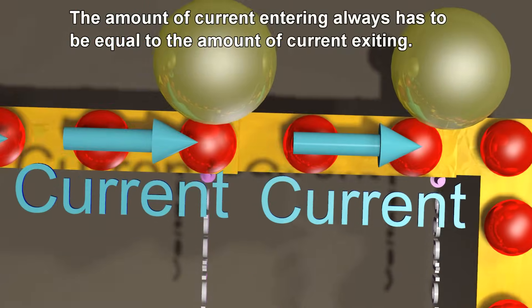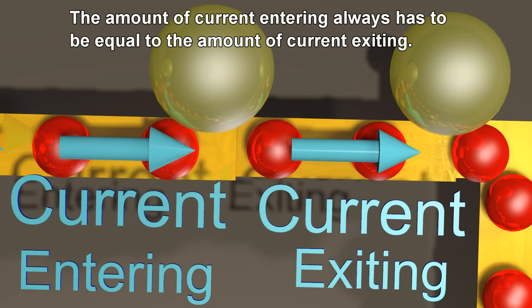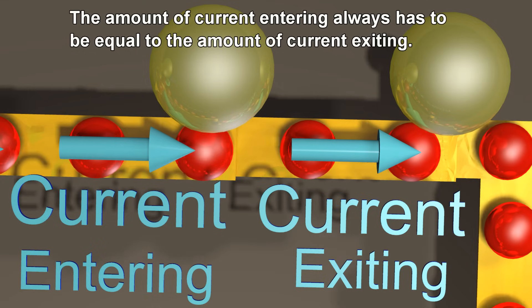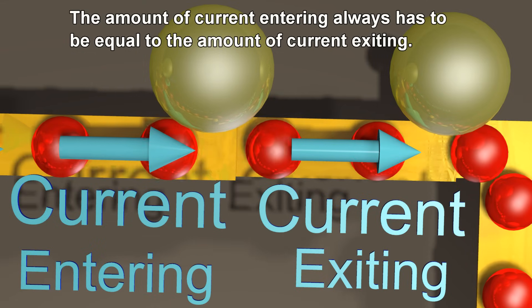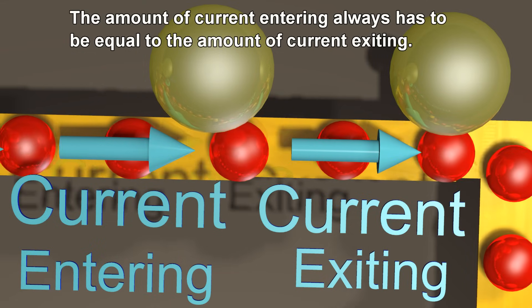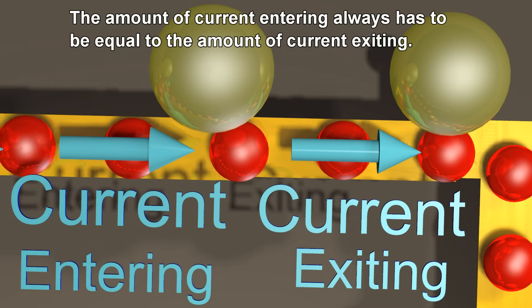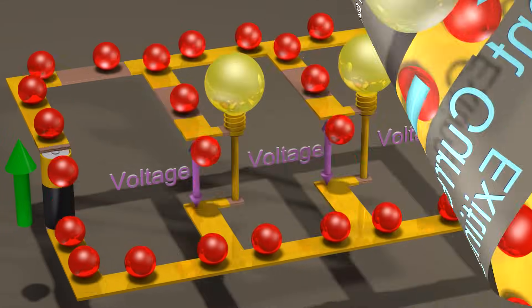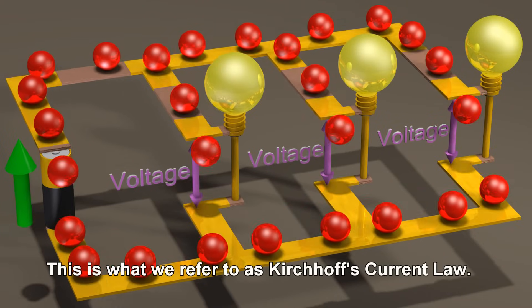The amount of current entering always has to be equal to the amount of current exiting. This is what we refer to as Kirchhoff's current law.